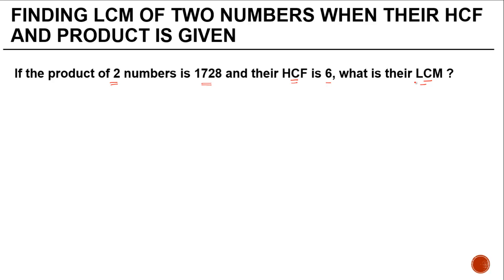If you remember, the product of two numbers equals their highest common factor multiplied by the least common multiple. You are told that the product of two numbers is 1728.